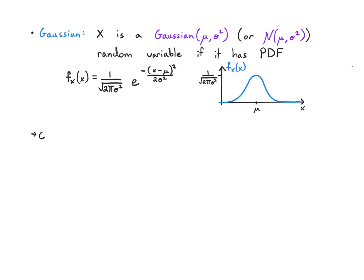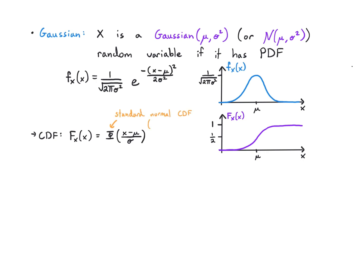The CDF is defined by a function we call Φ, which we'll talk about on the next page. This is an integral we can't evaluate in closed form, so when we need a probability we're going to have to plug into this Φ function. The mean is really simple — it's just μ — and the variance is just σ². So when you define the Gaussian you write out the parameters, and those parameters happen to be the mean and variance.